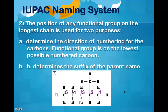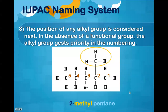I'm then going to determine the direction for numbering, very similar to what we did yesterday with alkenes and alkynes. My functional group is attached to the second carbon. If I had numbered from the left, it would have landed on the fourth carbon, which is incorrect. So we want to keep it with the lowest possible number. That means this carbon, what we're going to call a methyl group, is attached to my second carbon.